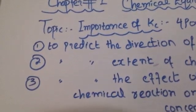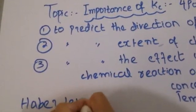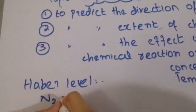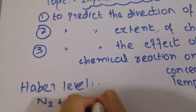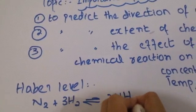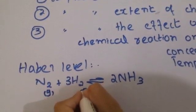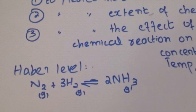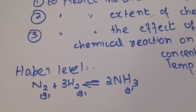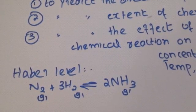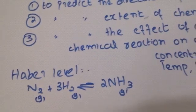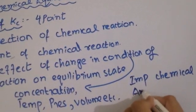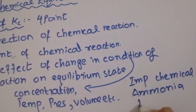We have the Haber process, which is used at the industrial level. The equation for the formation of ammonia is: N₂ + 3H₂ → 2NH₃. Nitrogen and hydrogen are gases that exist in air. At large scale, important industrial chemicals include ammonia and sulfuric acid (H₂SO₄).